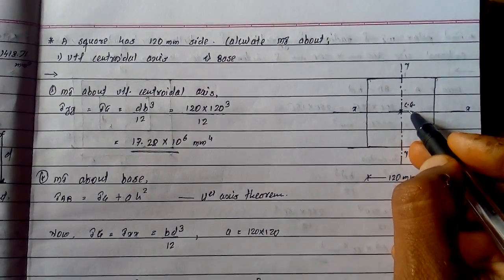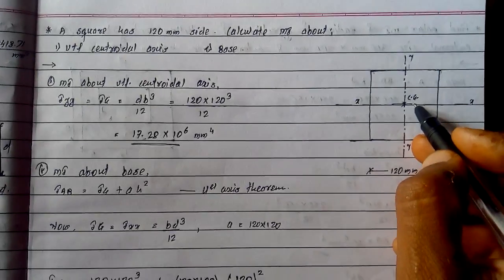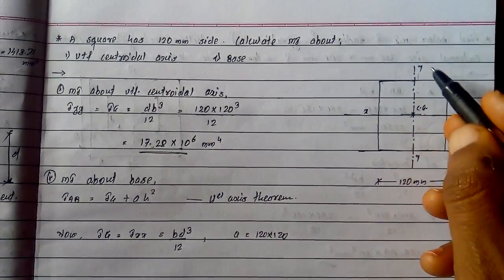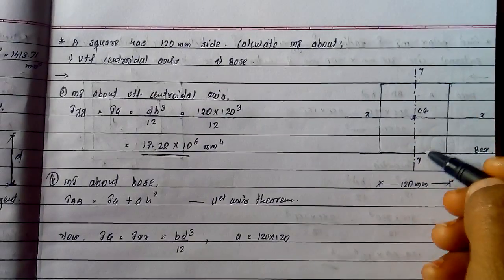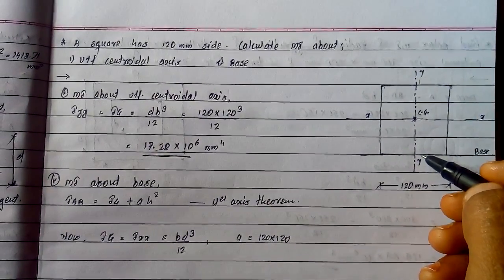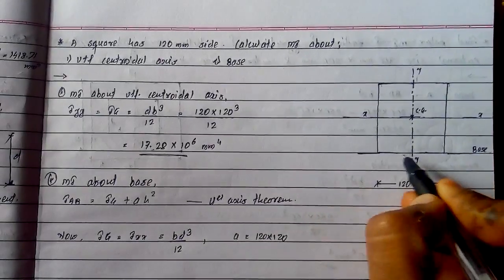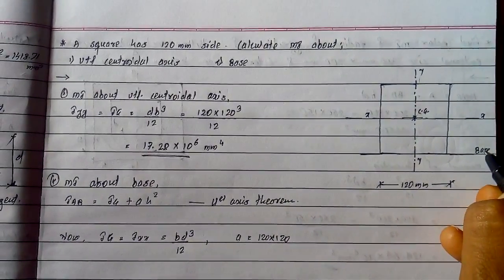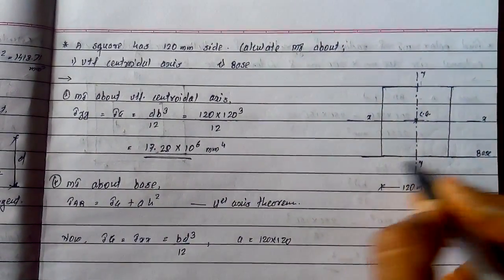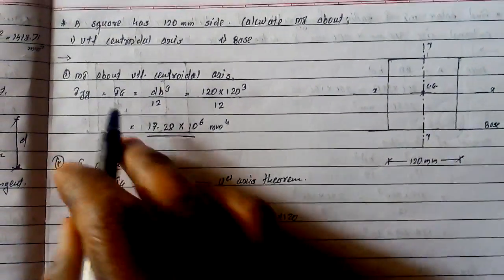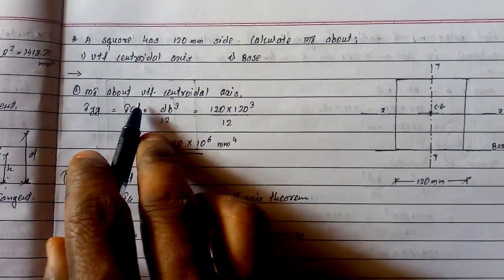We need to calculate the moment of inertia about vertical centroidal axis, which is nothing but I_yy, and second one about base, which is I_base.